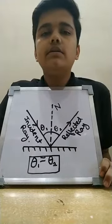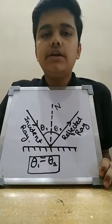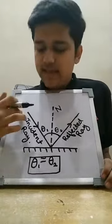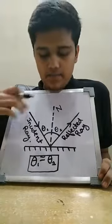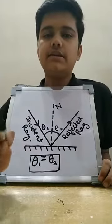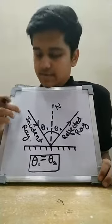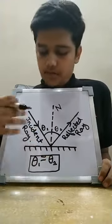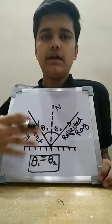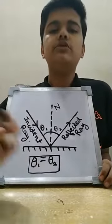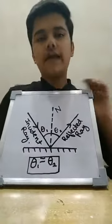There are only two laws related to reflection. The second law states that the incident ray, the normal, and the reflected ray all lie in the same plane. That means, as you can see in this 2D figure, if the incident ray is in two dimensions, then the normal and reflected ray would also be in two dimensions. Those were the basic things related to reflection.